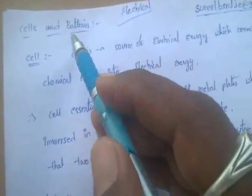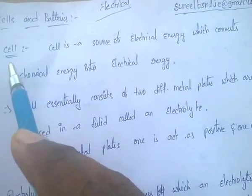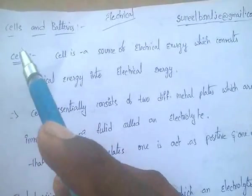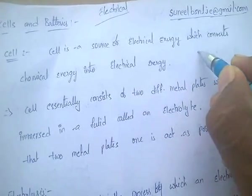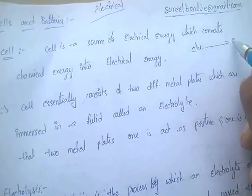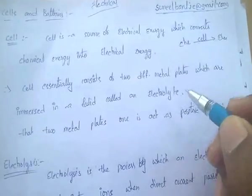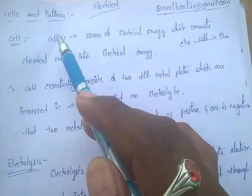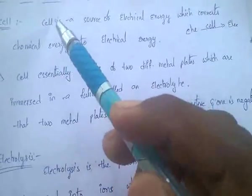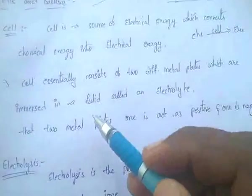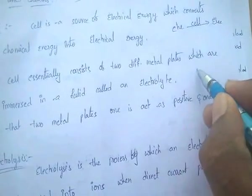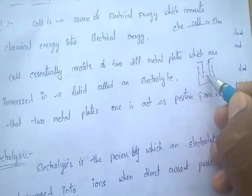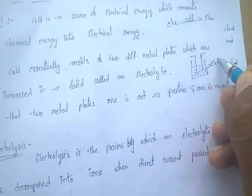Cells and batteries. What is a cell? A cell is a source of electrical energy which converts chemical energy into electrical energy. These cells essentially consist of mainly two different metal plates which are immersed in a fluid. That fluid is called the electrolyte.